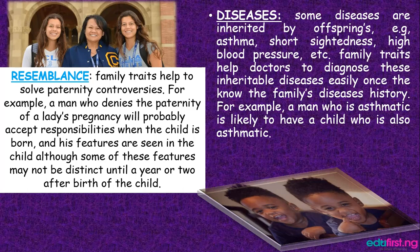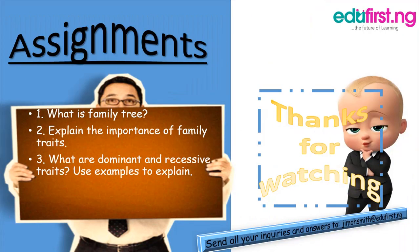We'll also talk about diseases. For example, an asthmatic patient can possibly give birth to an asthmatic child. These are some of the family trends we're talking about. In family trends, it is very important to know your genes. Family trends is all about resemblance and physical features.